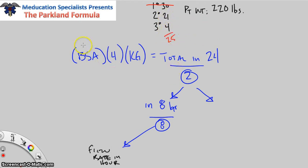I always write out BSA times 4 times kilograms. Right above it, write 25%. Four is going to be 4. And the kilograms—here's your patient weight in pounds, divide by 2.2—this is 100 kilos. So then put 100 kilos here. We crunch the numbers: 25 times 4 is 100, and 100 times 100 is 10,000 cc's.